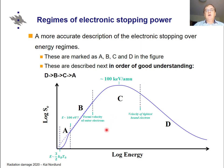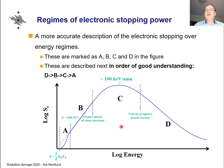To understand the shape of the electronic stopping curve, I've divided it into four regimes. This is not a standard definition but is done for pedagogical purposes for this course. The four regimes are named simply A, B, C, and D. The reason for this division is that there are four different physical explanations for these different regimes. I would say that two of them are well understood: regime D and regime B. Regime C is pretty well understood, and regime A is actually the least well understood.